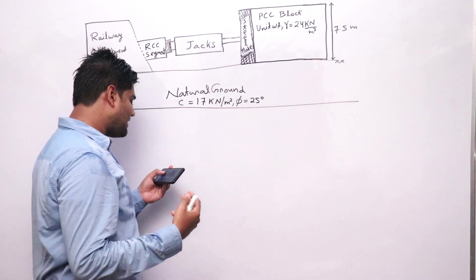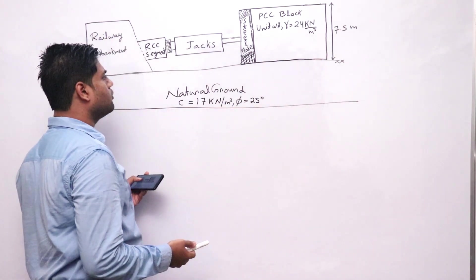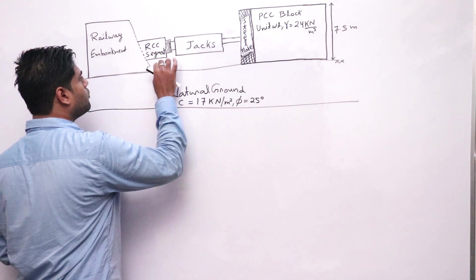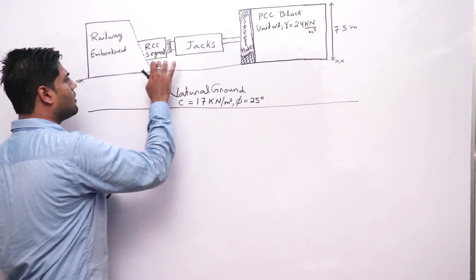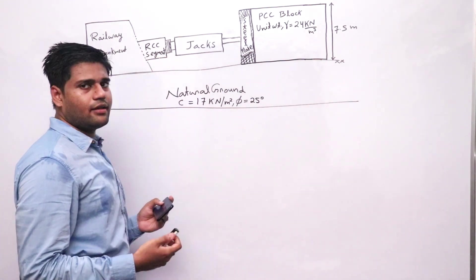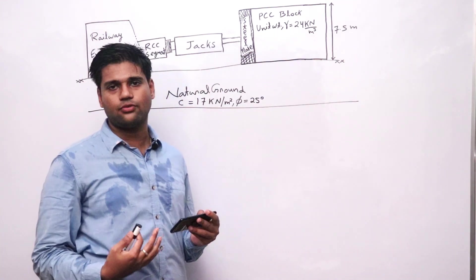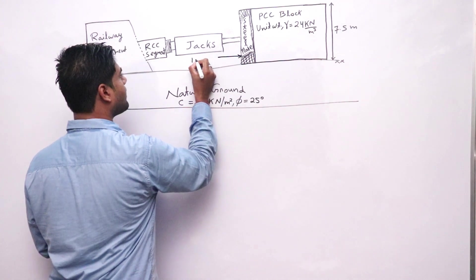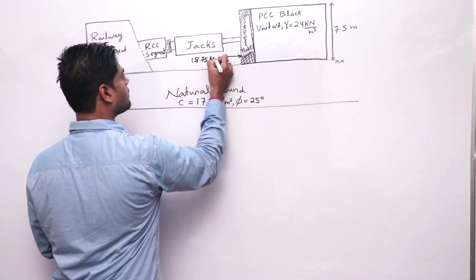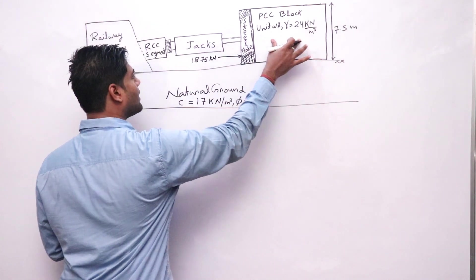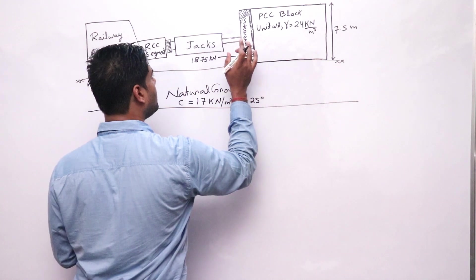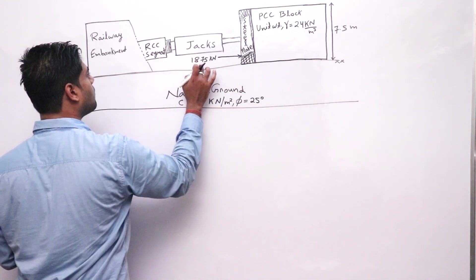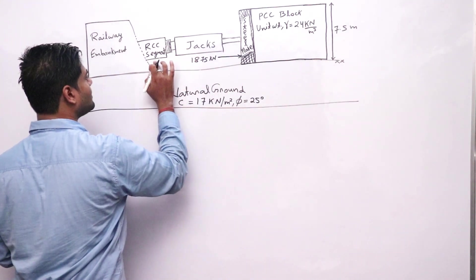So in the next line, the jacks are required to apply a force of 1875 kN to push this RCC segment. He wants to apply the force of 1875 kN on this segment so that he can fix this segment. There is a steel plate attached to it, so the steel plate will provide the same amount of force to the jack so that the jack can apply the same amount of force of 1875 kN to this RCC segment.